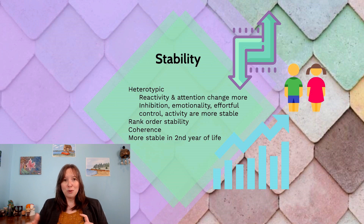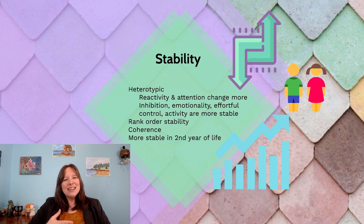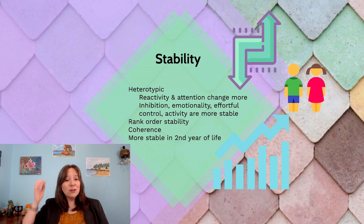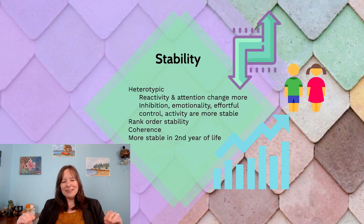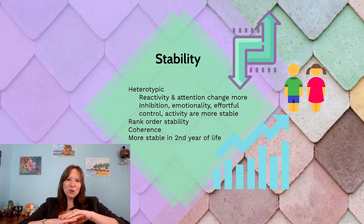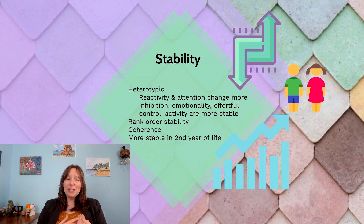We wouldn't expect attention to be very stable — we'd expect it to have age norms. We also know that other indices, such as inhibitory control, other forms of emotionality such as Goldsmith's version and Buss and Plomin's version, tend to be more stable. We also find that effortful control can be more stable based on how Rothbart defined it, and activity tends to be more stable. But it's important to understand that this stability can still look like change in some ways.